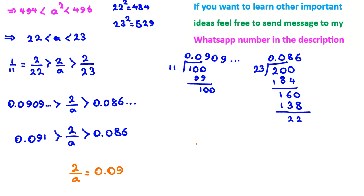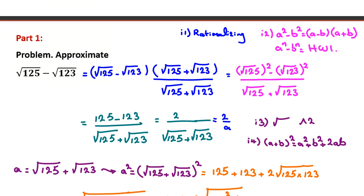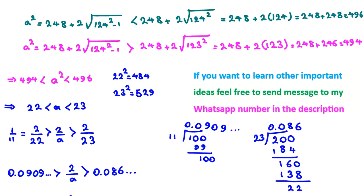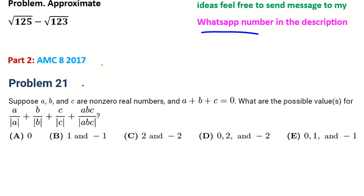Since 2/A is between 0.086 and 0.091, and rounding to the nearest hundredth, the approximation is 0.09. That is our answer, using four key ideas. Now let's work on Part 2, the AMC problem.